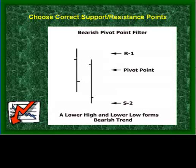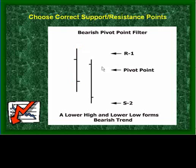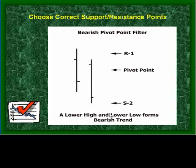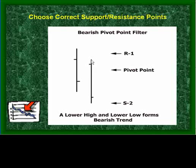If we're bearish, this is exactly what a pivot point would look like. We would see from this data: high, low, close — we'd get an R1, a pivot point, and a targeted S2. Doesn't this define lower highs and lower lows as it relates to a downtrend? And that's the definition of a downtrend, correct?